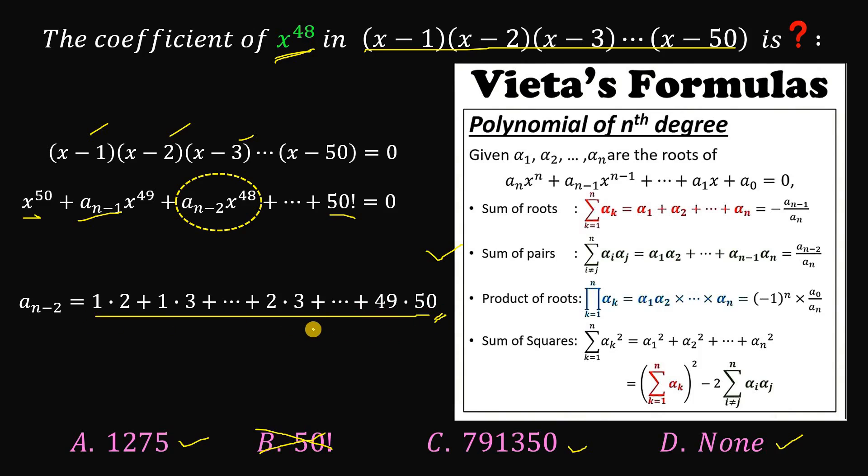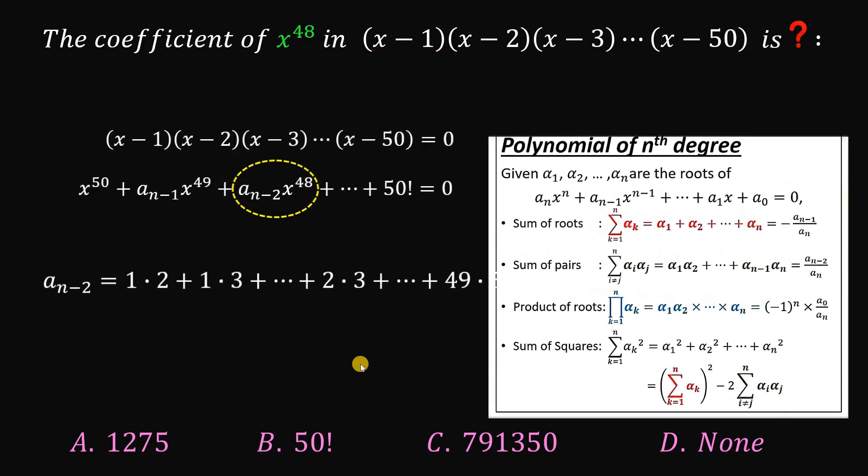Now, the question is, how do we get this sum? And the answer is this identity on the bottom part. So let's focus on this.